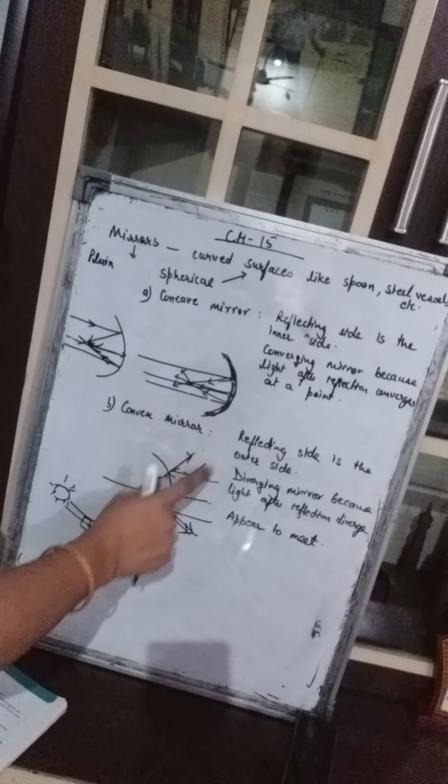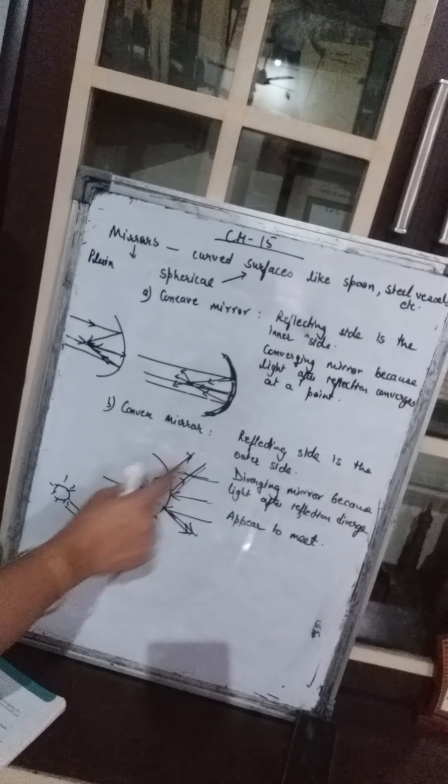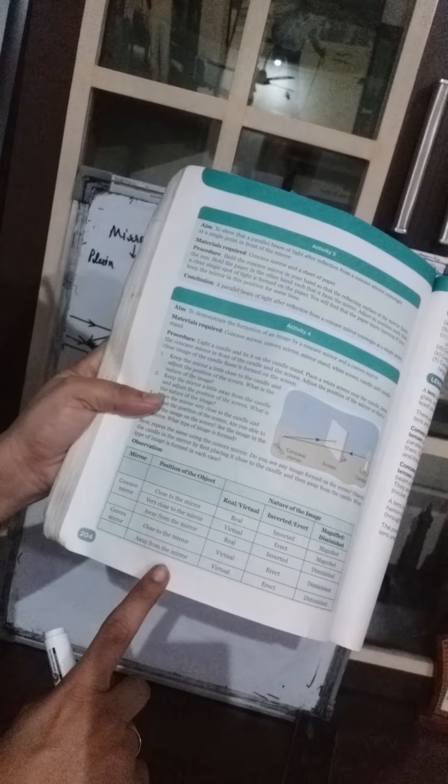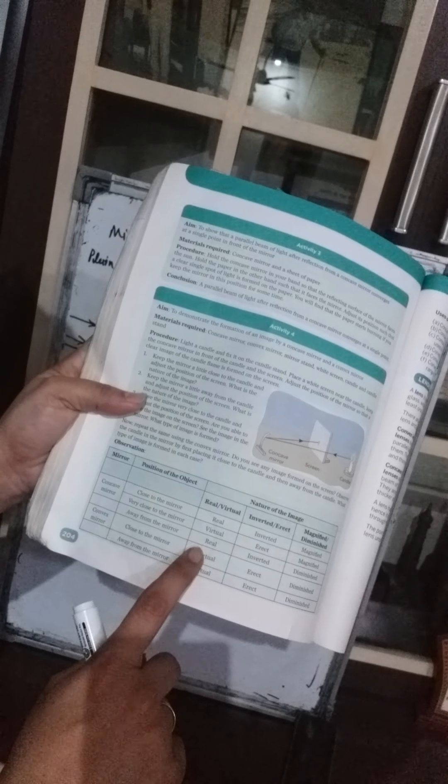For the convex mirror, we consider two cases — close and away. In both cases, a virtual image is formed, because the rays are diverging and only appear to meet at a point. Virtual images are always erect. In both cases the image is diminished — smaller in size. So you have to learn this table.